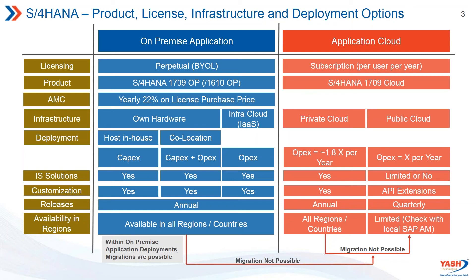Whether you deploy on your own hardware in-house, co-located, or in the infrastructure cloud, all industry solutions are supported with virtually no difference in customization. Releases are annual, coinciding with private cloud. The core of the application is the same across all columns — only the degree to which SAP lets you touch the code differs. In the public cloud, SAP does not let you touch the code, but quarterly updates are bundled into annual releases for private cloud and on-premise.